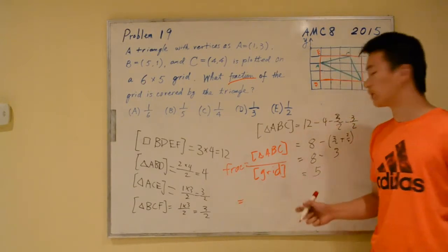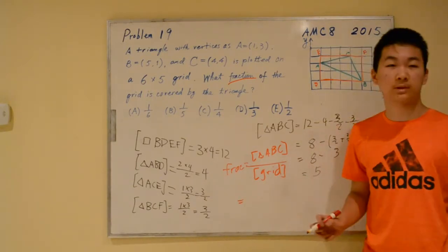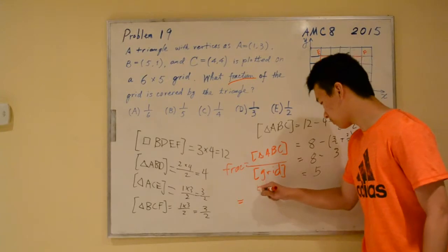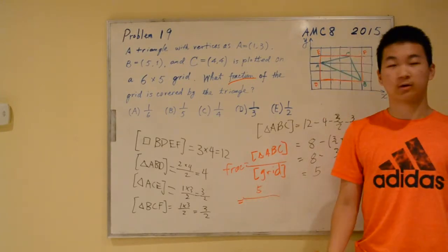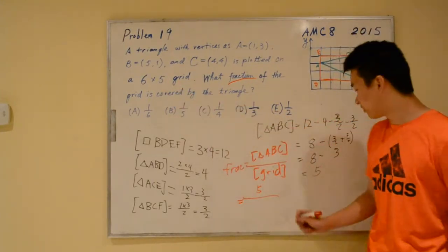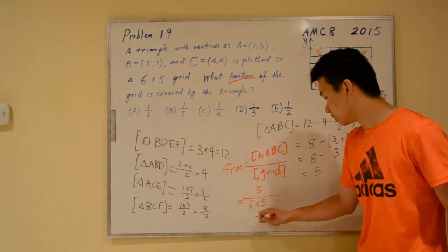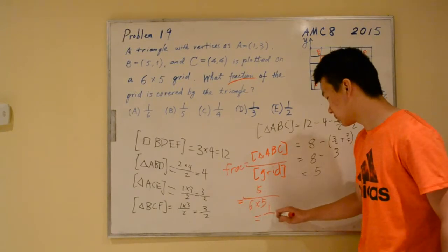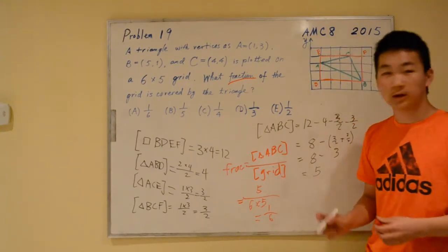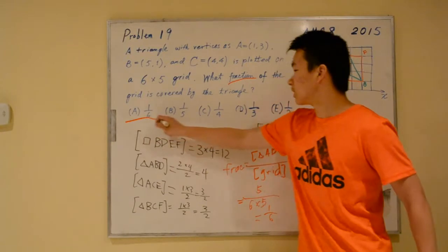We already found the area of triangle ABC - that's 5. The area of the grid is given as 6 times 5. So, this reduces to 1/6. Our answer is A, 1/6.